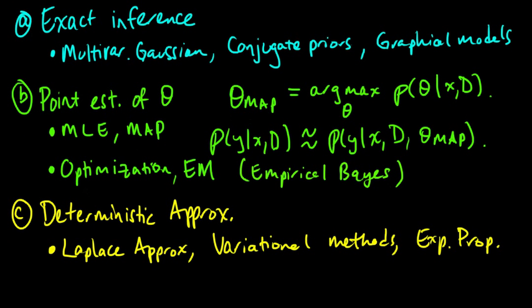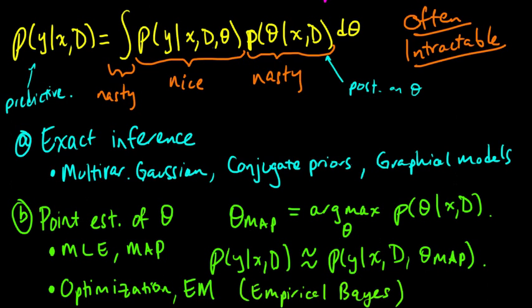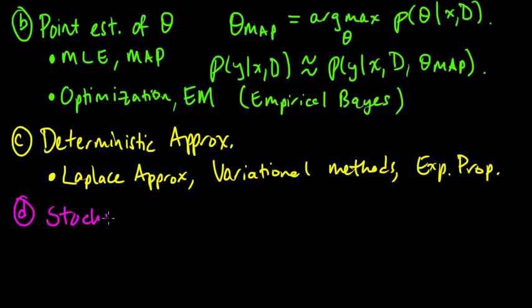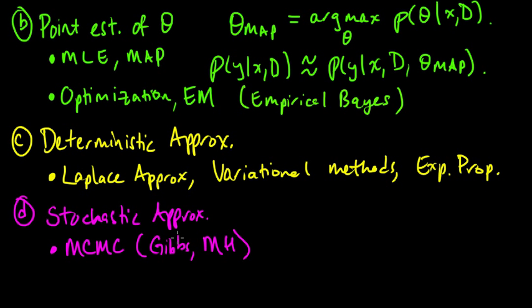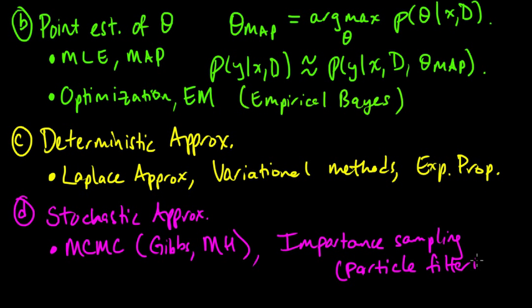And the fourth category of methods to solve this intractable problem, or at least parts of it, is stochastic approximations. Very popular and typically very simple to implement. And these would include Markov chain Monte Carlo, MCMC, such as Gibbs sampling or Metropolis-Hastings, two types of MCMC techniques. Or importance sampling - importance sampling is a way to approximate expected values. And a particularly important type of importance sampling is particle filtering, a sort of sequential importance sampling.